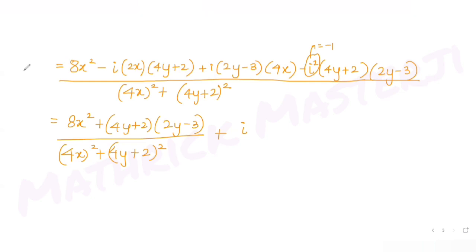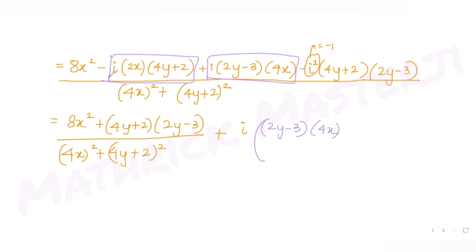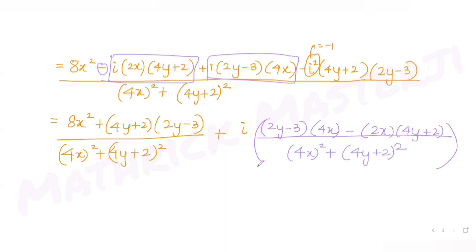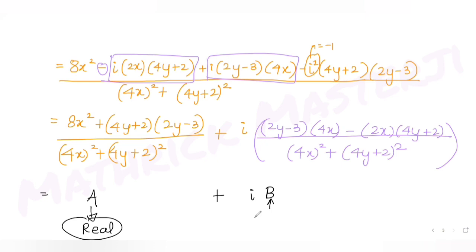For the imaginary part, I collect the i terms, which give (2y minus 3) times 4x minus 2x times (4y plus 2), divided by the same denominator. So the expression is now written in the form a plus ib, with a clear real part and imaginary part identified.